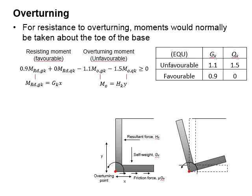As for the unfavorable moment, the resultant forces caused by the active pressure, which can be in the form of GK or QK, is to be multiplied with its lever arm.